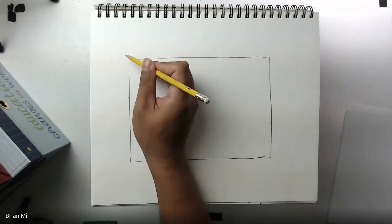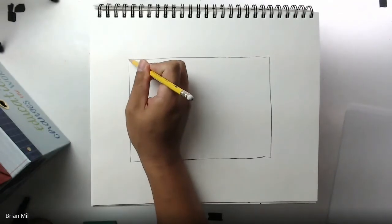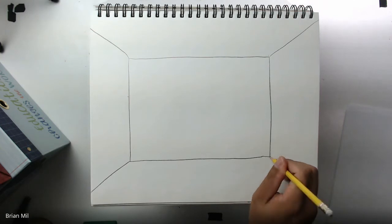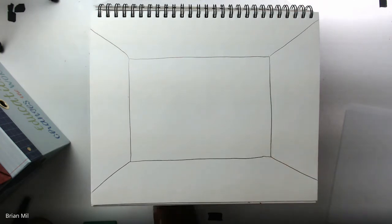Now, on each corner of the rectangle, I want you guys to draw a diagonal line going away from it. Just like this, here, another one here, and here. Just like that.